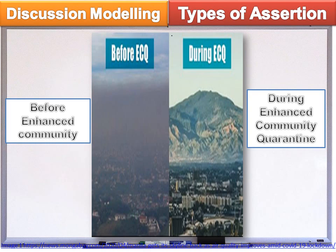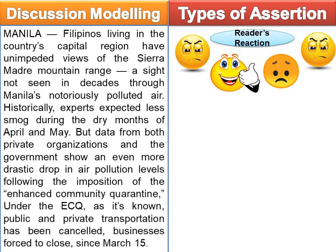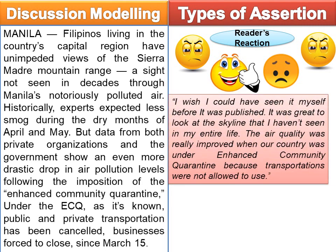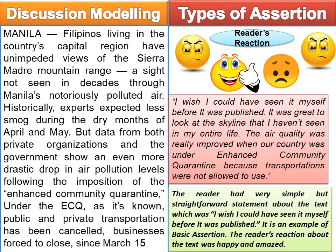Let's have an example. Let's read the article. We will find out the type of assertion and the reaction of the reader about the article. Here is the statement of a reader: 'I wish I could have seen it myself before it was published. It was great to look at the skyline that I haven't seen in my entire life. The air quality was really improved when our country was under enhanced community quarantine because transportation was not allowed to use.' The reader had a simple but straightforward statement, which is an example of basic assertion. The reader's reaction about the text was happy and amazed.